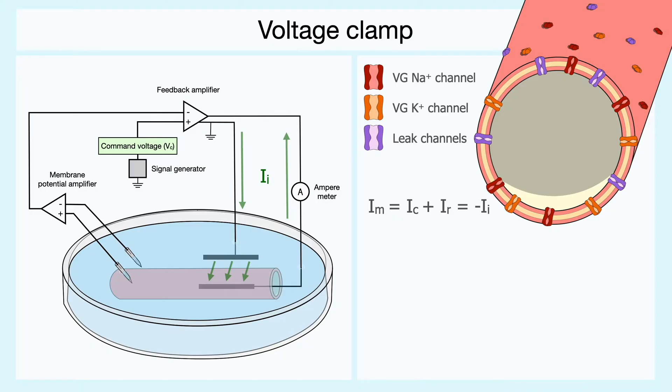One positive aspect of the voltage clamp technique is that it essentially removes the capacitive current. Indeed, as we've defined it, the capacitive current is equal to the capacitance of the membrane voltage, times the rate of change of the membrane potential with respect to time. But if we hold the membrane potential constant at a value equal to the command voltage, then the capacitive current equals zero.